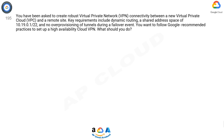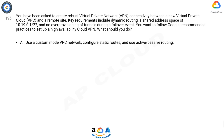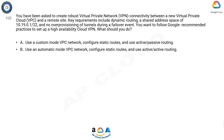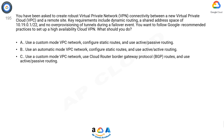Question 195: You have been asked to create robust virtual private network (VPN) connectivity between a new virtual private cloud (VPC) and a remote site. Key requirements include dynamic routing, a shared address space of 10.19.0.1/22, and no over-provisioning of tunnels during a failover event. You want to follow Google recommended practices to set up a high availability cloud VPN. What should you do? Option A: Use a custom mode VPC network, configure static routes, and use active/passive routing. Option B: Use an automatic mode VPC network, configure static routes, and use active/active routing.